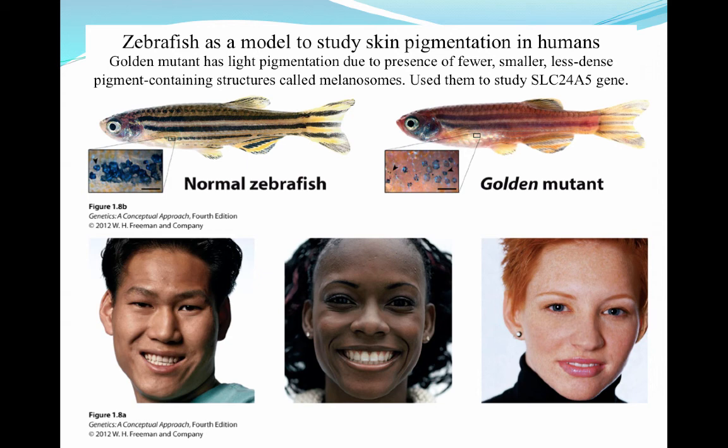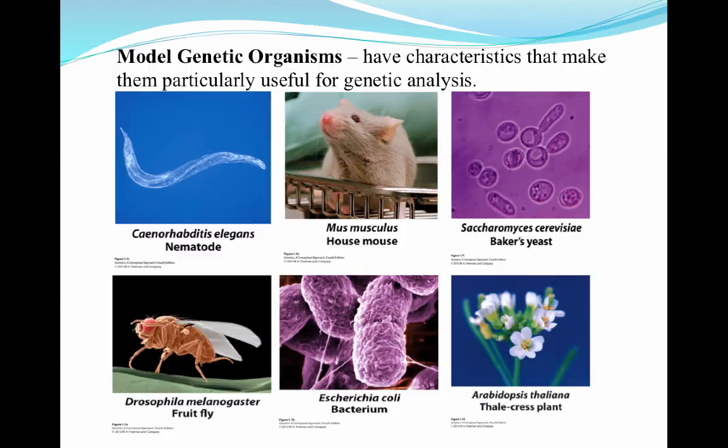The SLC24A5 gene really dictates the type of pigmentation humans are going to have — whether they're white, Hispanic, Black, or any other ethnicity. This gene lends itself to how intensely pigmented those melanosomes will be. So we can study zebrafish to actually help us better understand humans.